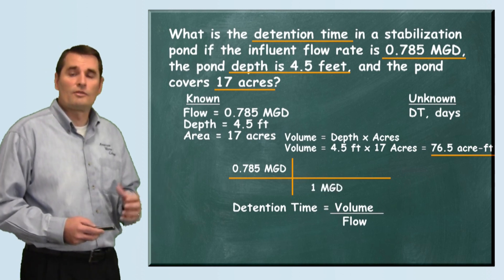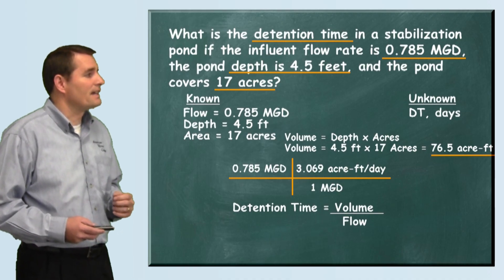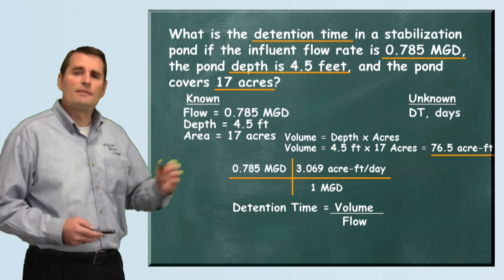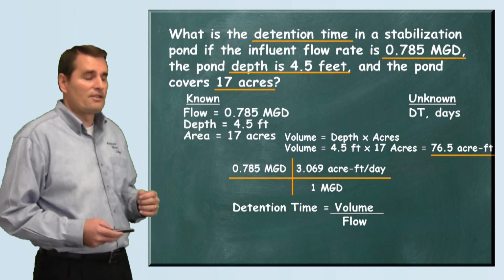We use the unit conversion or the equivalent that says there's one MGD for every 3.069 acre-feet per day. This is typically given on an equivalent sheet or the formula sheet with your certification exam.